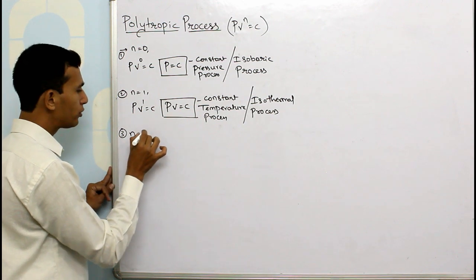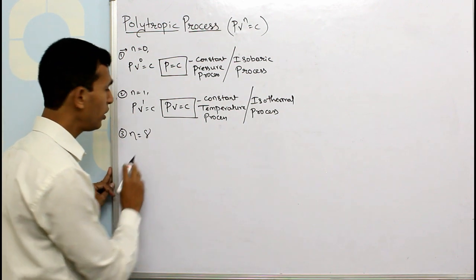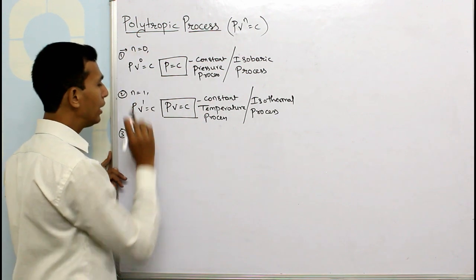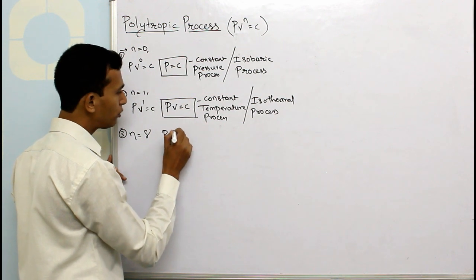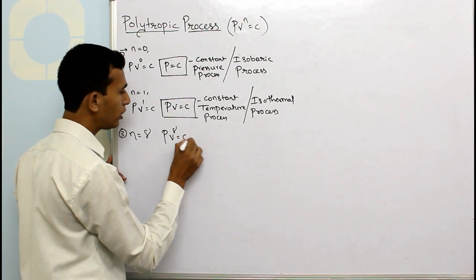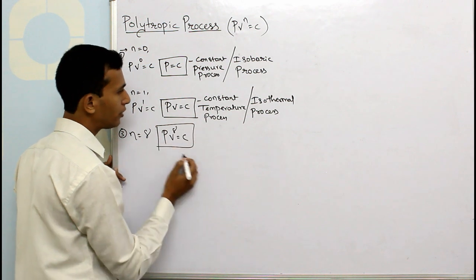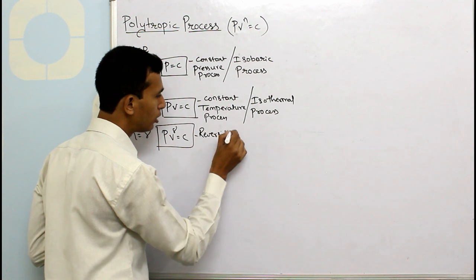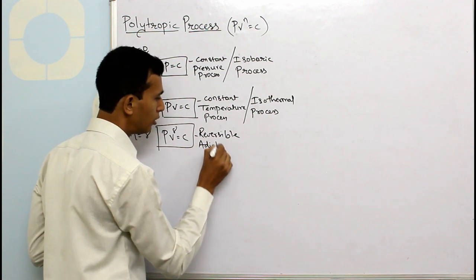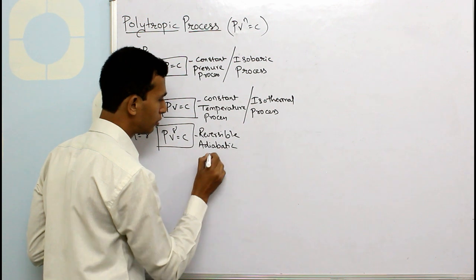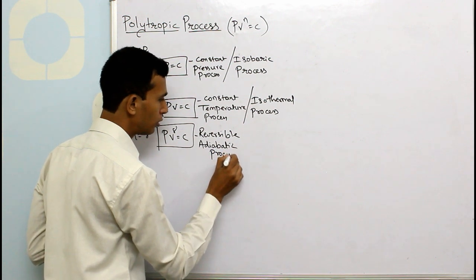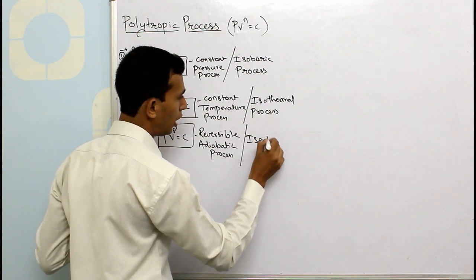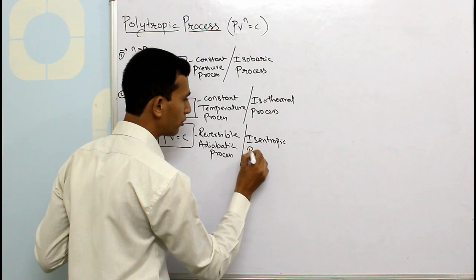The third case: if I put n equals to gamma — now what is gamma? It is called as the adiabatic index, and the value of gamma is always greater than unity. Putting this, we have PV raised to gamma equals to C. This is used for the reversible adiabatic process, also called as the isentropic process.